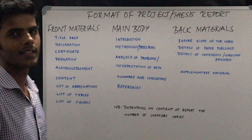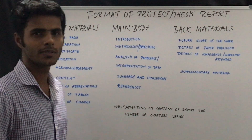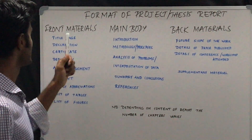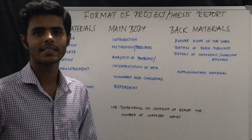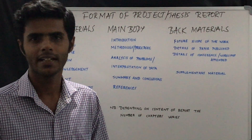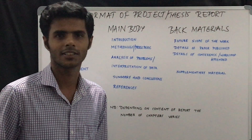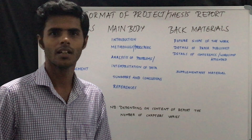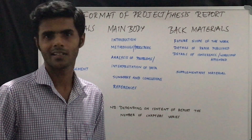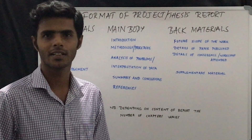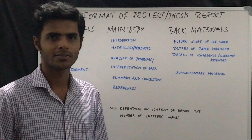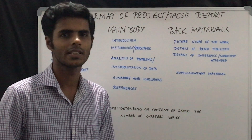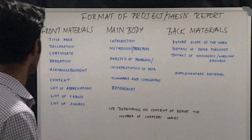So what are front materials? The first one is the title page, where you are writing the title of your dissertation. Your institution, your name, your affiliation, year of submission, and month of submission — everything will come in that front material.